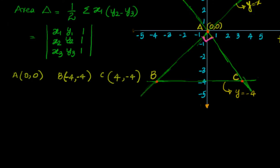Let's apply the formula and find out the area of the triangle. So area is equal to half into the determinant with x1 that is 0, y1 is 0, 1, x2 is negative 4, y2 is negative 4, 1, x3 is 4, y3 is negative 4, and 1.